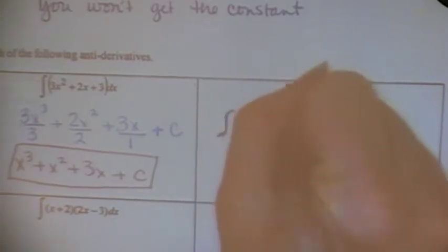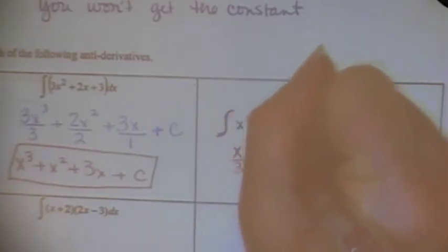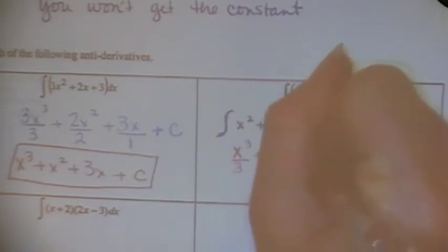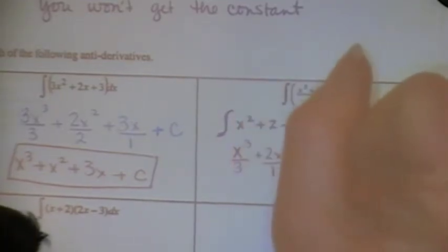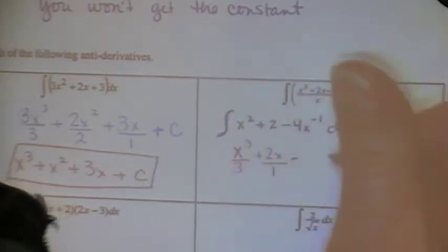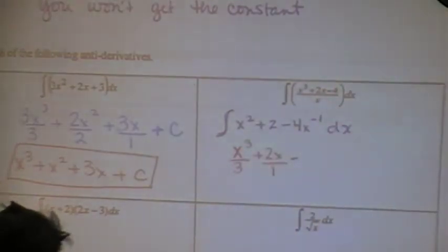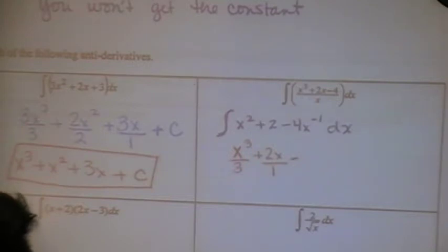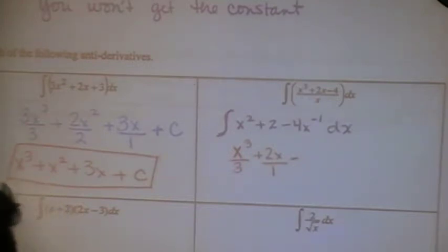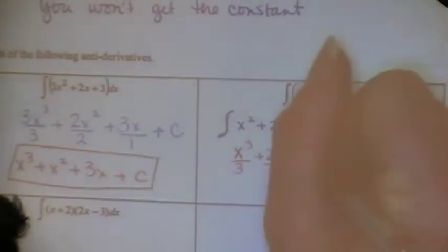We get X cubed over 3 plus 2X over 1. Now, anybody remember what happens with X to the negative 1? It's going to be no X at all because you're just going to have a power of zero, which goes to one. And when that happens, it's actually the natural log of X.